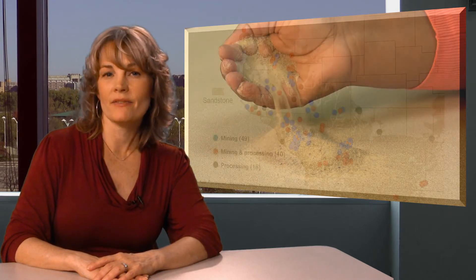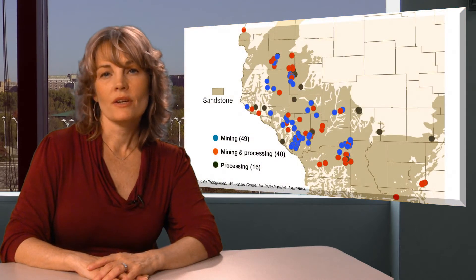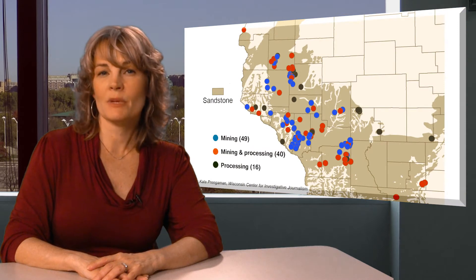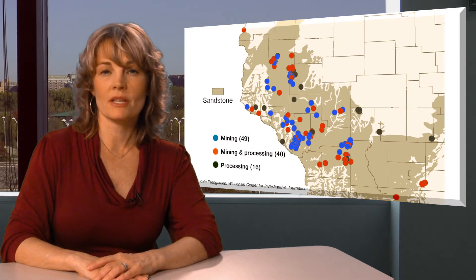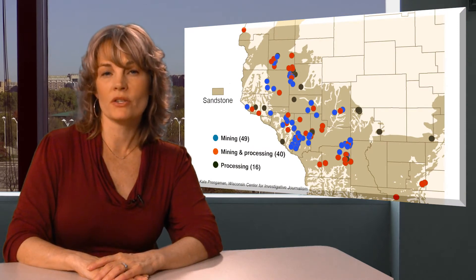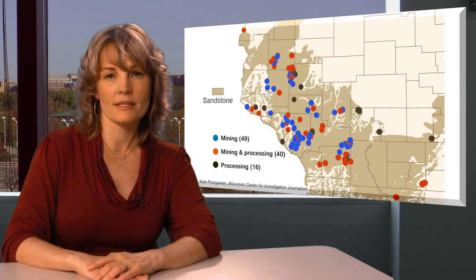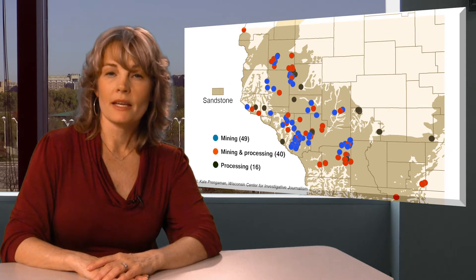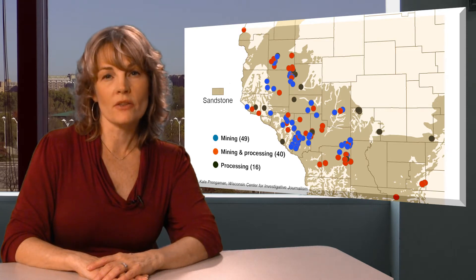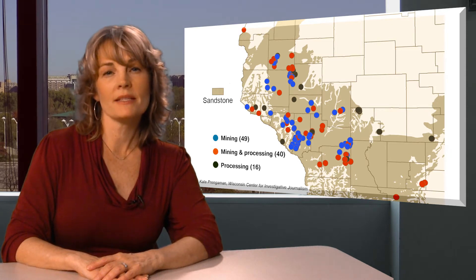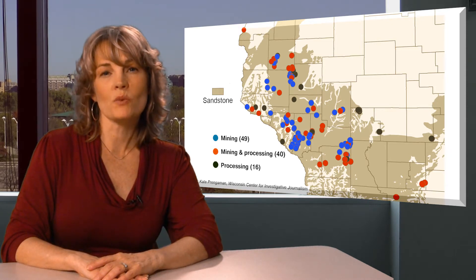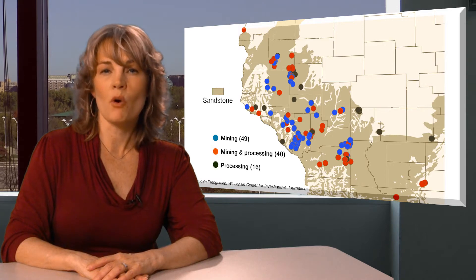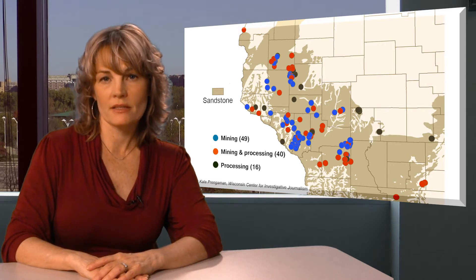Where is frac sand found? Frac sand is being mined from sandstone formations in much of western and central Wisconsin. In the eastern and southern parts of the state, the same formations are less well exposed and generally more fine-grained.